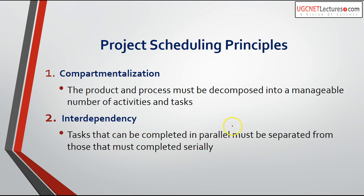The second phase is interdependency — tasks that can be completed in parallel must be separated from those that must be completed serially. If you do not separate parallel tasks from serial tasks, you will end up doing parallel tasks serially, which takes more time. For example, if six tasks can be done in parallel they will take one day; if you don't identify this, you'll do them serially and it will take much more time.